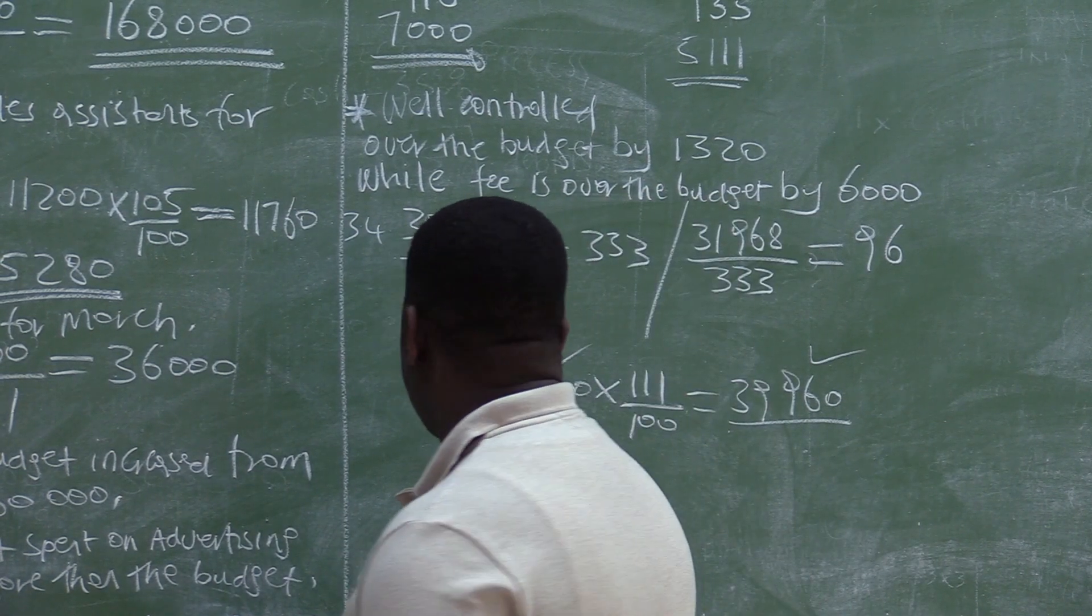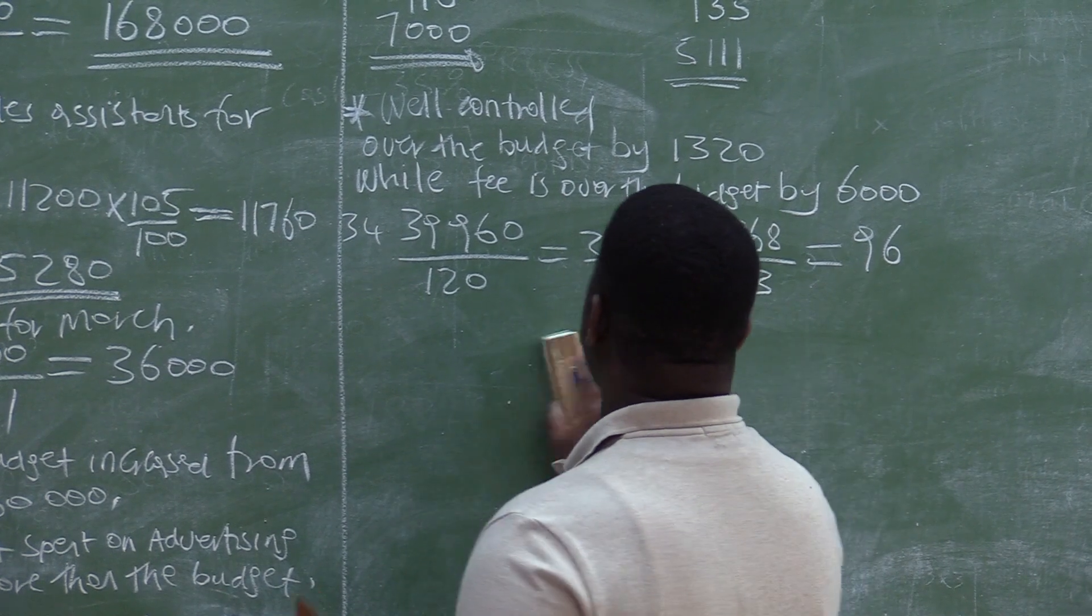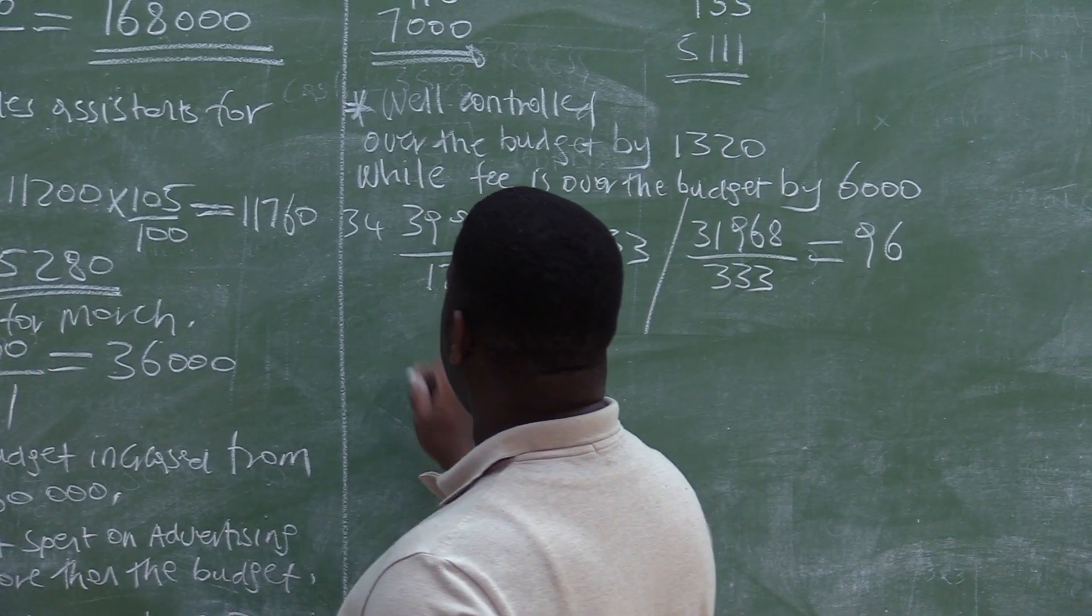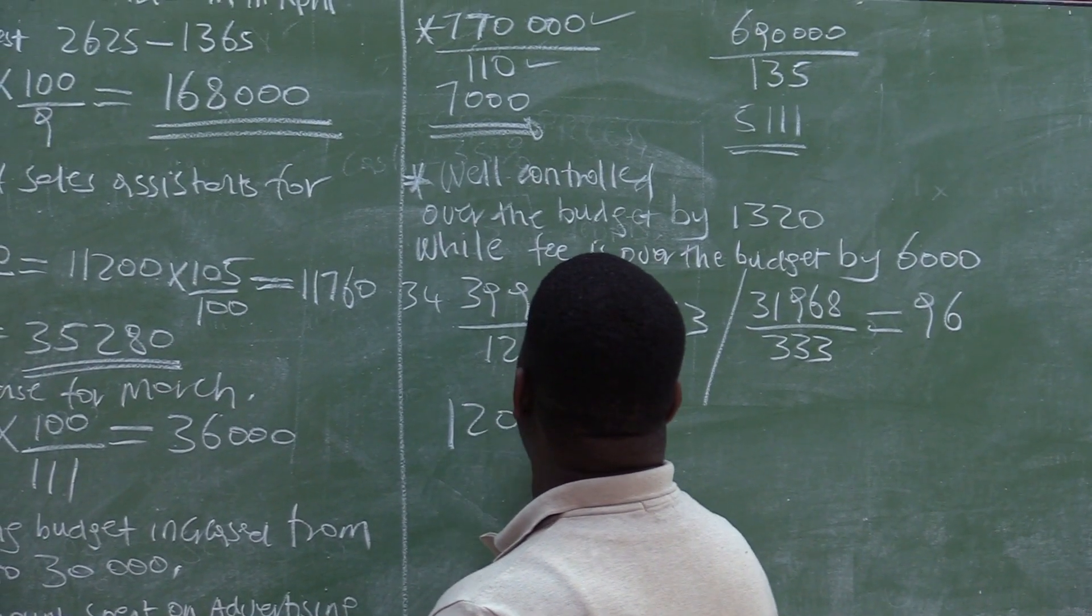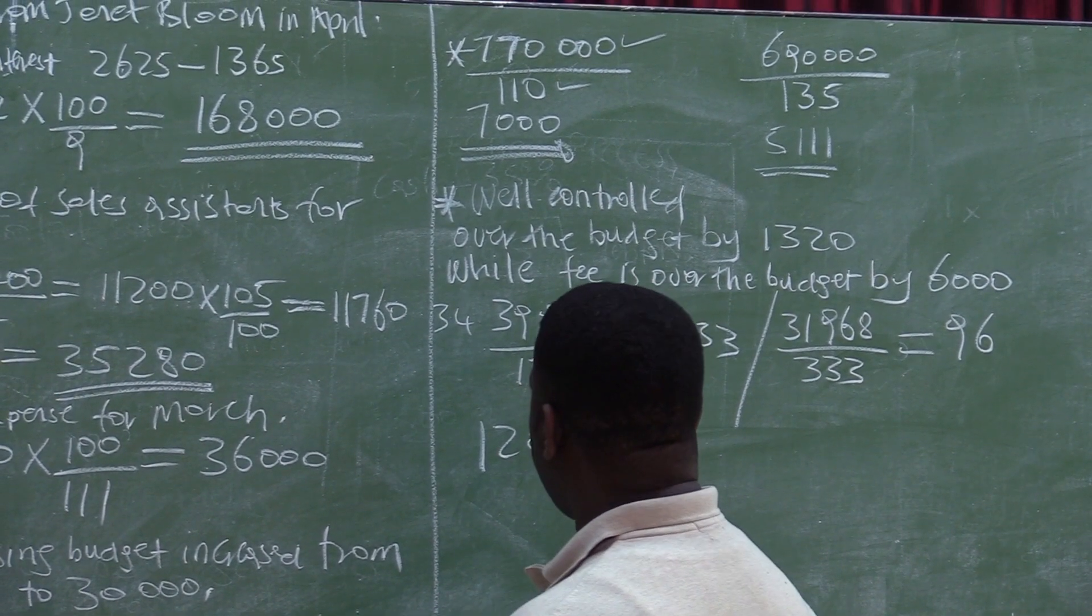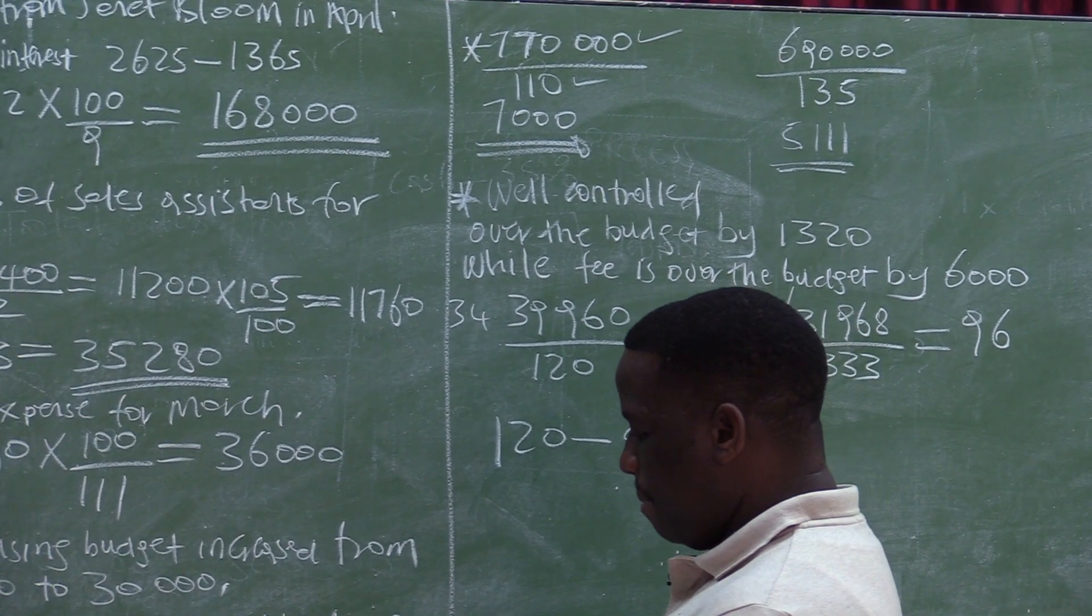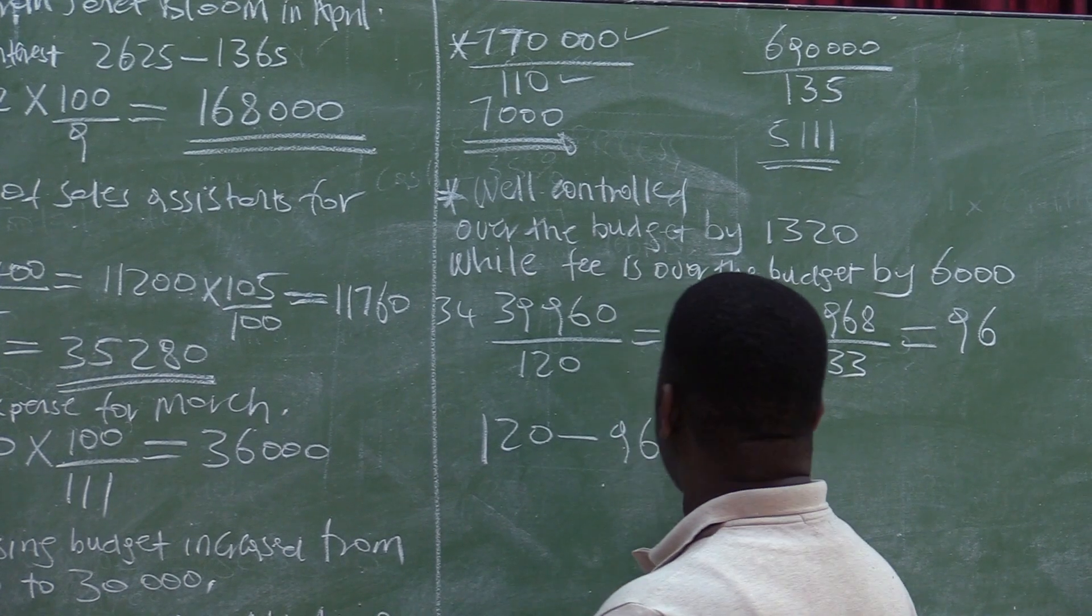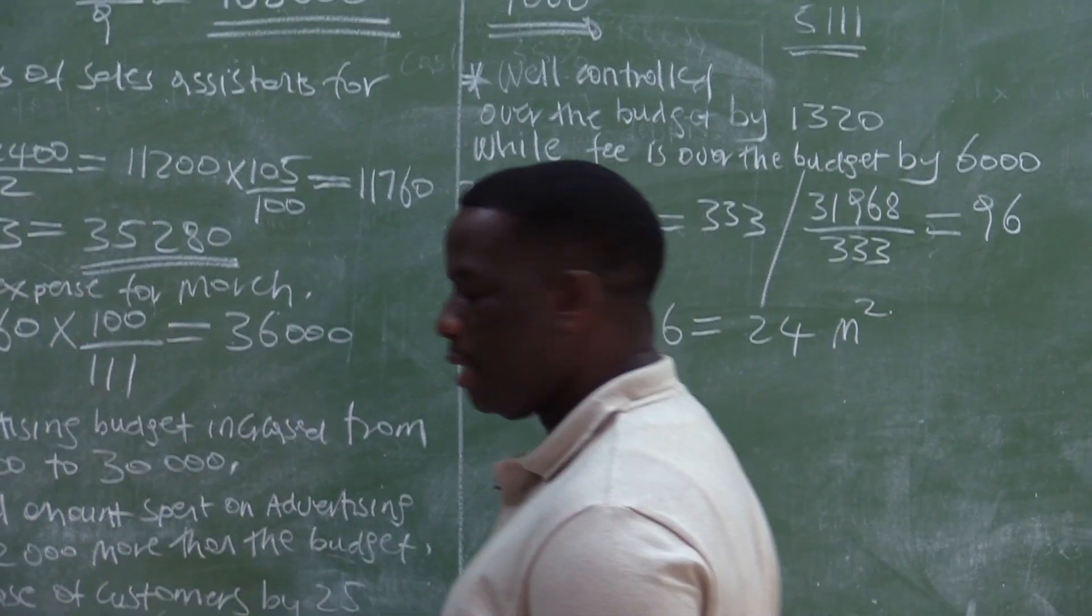96 square meters. So the question is asking us to calculate the reduction in square meters. We were renting 120 square meters. Now we have paid for 96 square meters. So the reduction will then be 120 minus 96, which equals to 24.